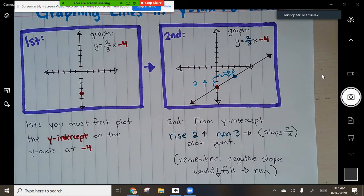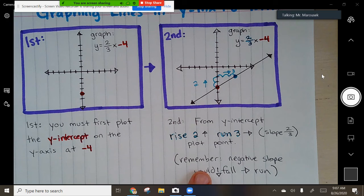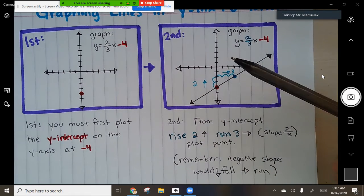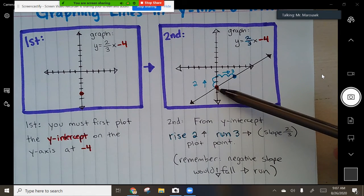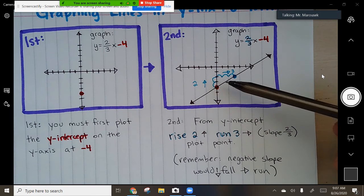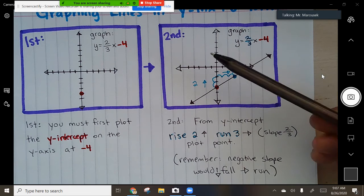So basically, you plot the y-intercept first, and then from the y-intercept, you deal with the slope. So people I've seen do mistakes. Sometimes they'll start their slope from the origin. You don't start your slope from the origin. You start your slope from the y-intercept. If it's a rise and run, cool. If it was a negative slope, you would have fallen and ran. And it would have created a negative slope.